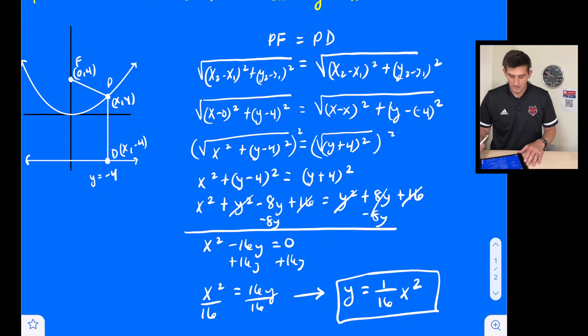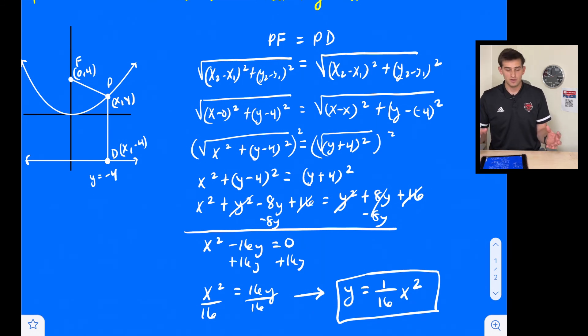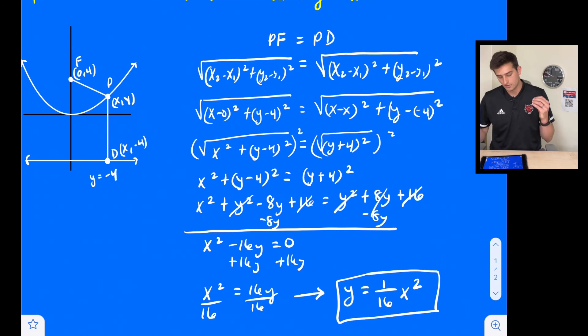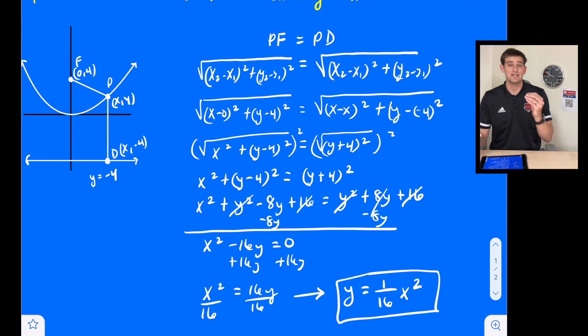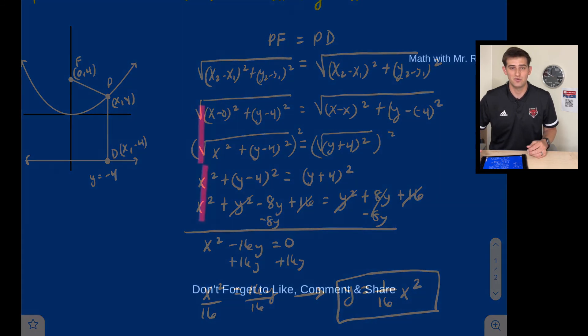So that's our equation of the parabola with focus at (0, 4) and directrix at y equals negative 4. And that's how you can use the focus, the directrix, and the distance formula to write an equation of a parabola.